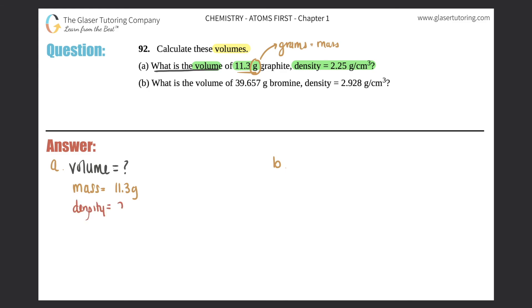And they gave us the density, which equals 2.25 grams per centimeter cubed. So I have density, mass, and volume. I know the formula: D equals m over V - density equals mass divided by volume.